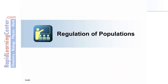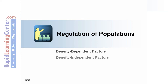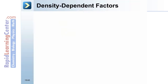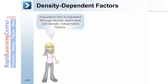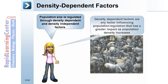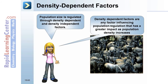Regulation of populations includes density dependent and density independent factors, as well as applications and population cycles. Population size is regulated through both types of factors. Density dependent factors influence population regulation and have a greater impact as population density increases.